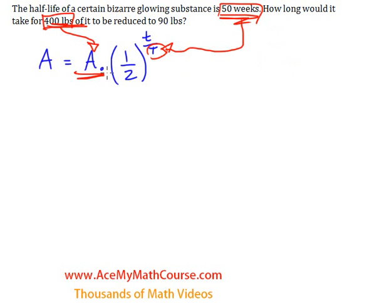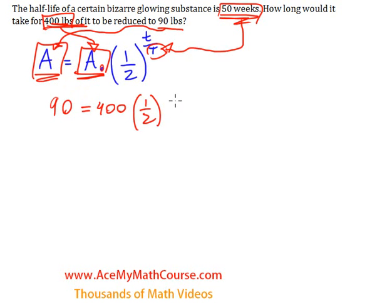The 400 will go in for the initial quantity, which is the A₀. The 90 pounds goes in here, which represents the final quantity A. So 90 equals 400 times one-half to the power of little t over 50. Now what we need to do is isolate t.